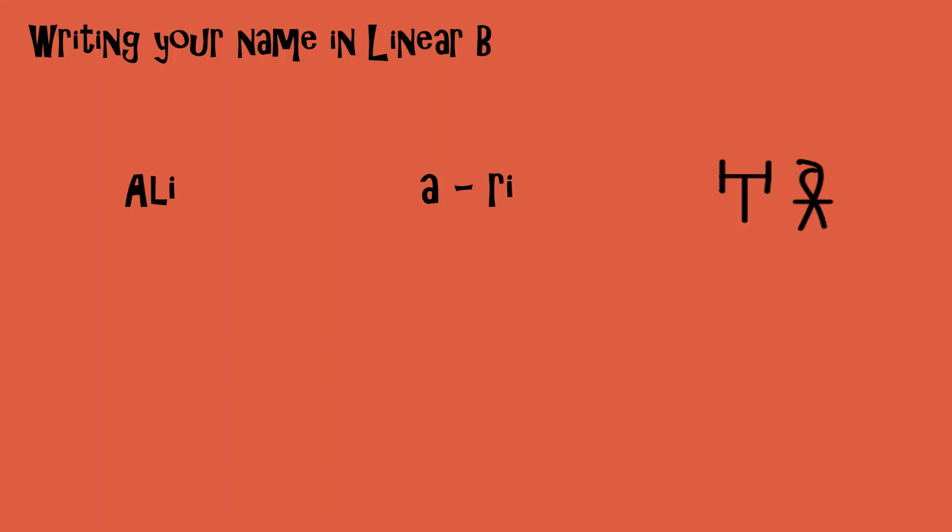So the RA sign could be both RA and LA. So if your name is something like Ali, you need to divide that up into two syllables, A and LI, but you need to use the sign for A and the sign for RI in order to write it.